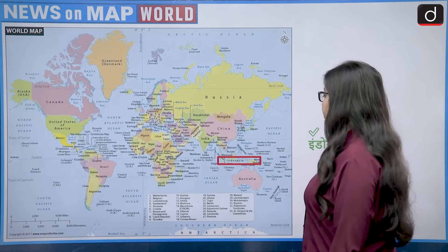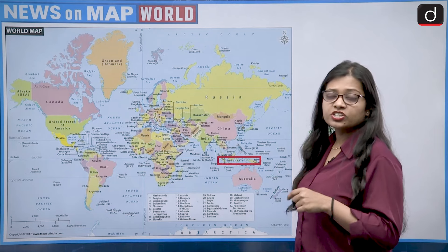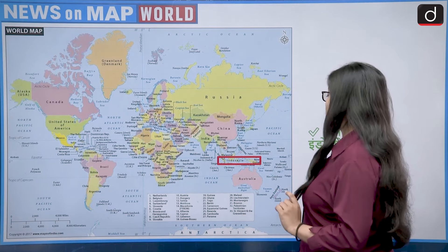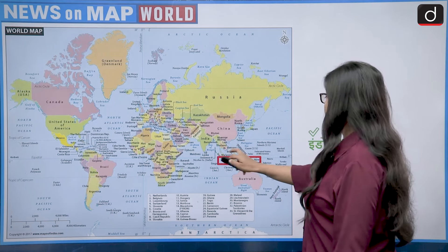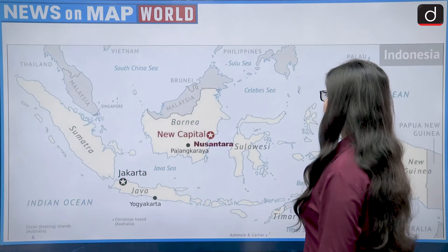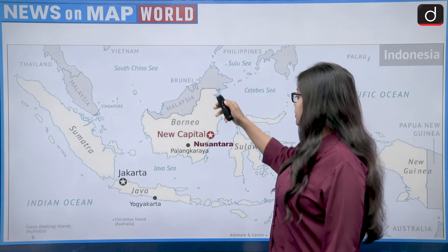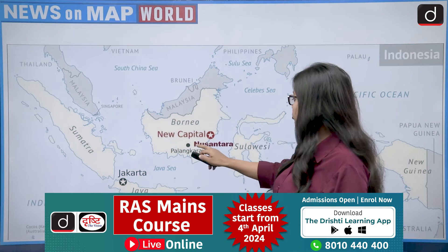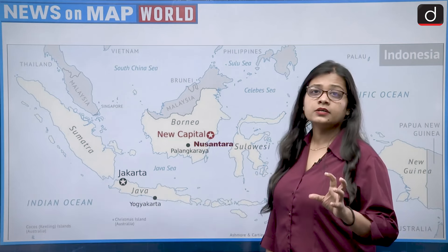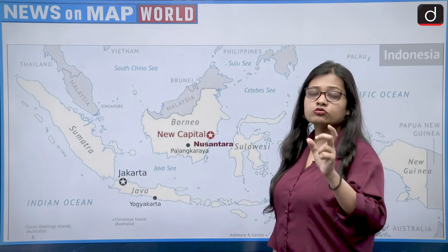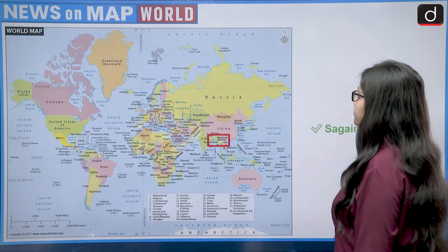The third pair is Nusantara–Indonesia. Nusantara has been selected as the new capital of Indonesia, replacing Jakarta. Indonesia is a Southeast Asian country, and Nusantara lies on the southern part of Borneo Island. Borneo Island is governed not only by Indonesia but also has regions of Malaysia. So Nusantara–Indonesia is also a correctly matched pair.